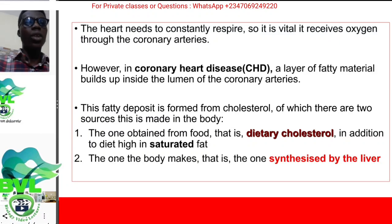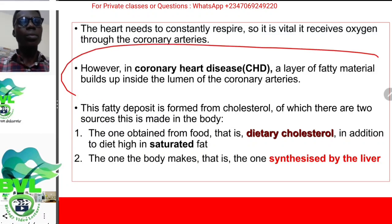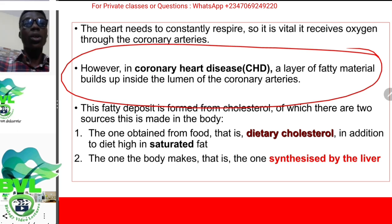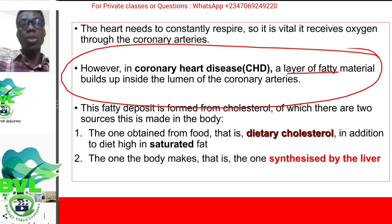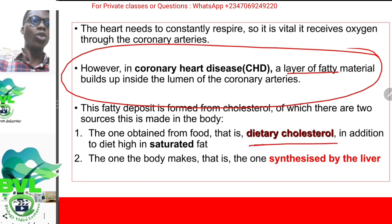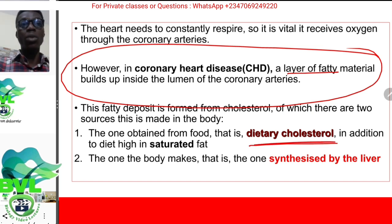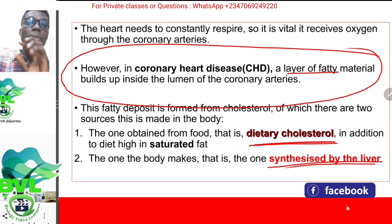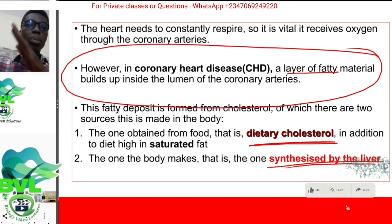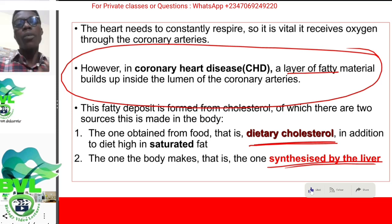So then, what is coronary heart disease? This is when some sort of fat layer blocks the lumen of the coronary arteries. This fat deposit is formed from cholesterol, of which there are two types — the ones in the food we eat, which we can control, and the ones that the liver synthesizes. Coronary heart disease means when there is an obstruction or deposition of a fat layer along the lumen of the arteries.